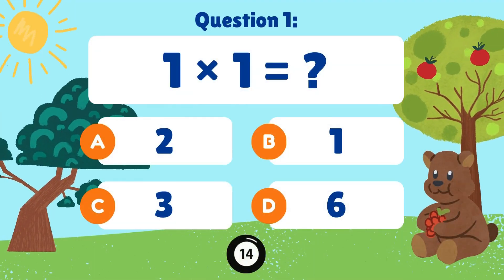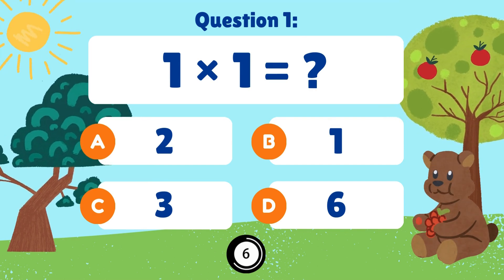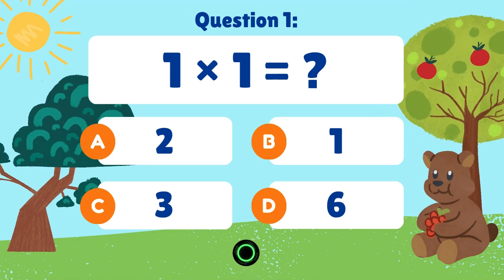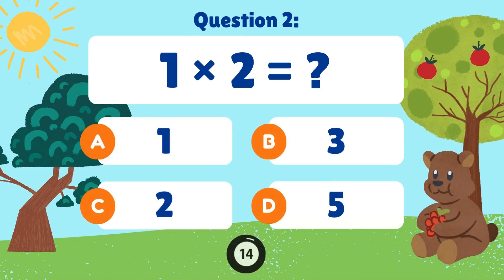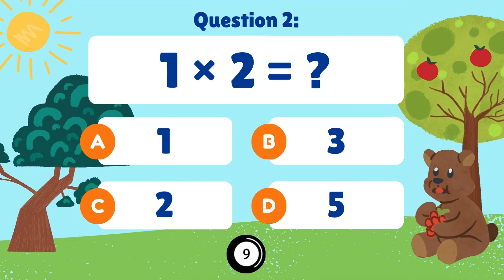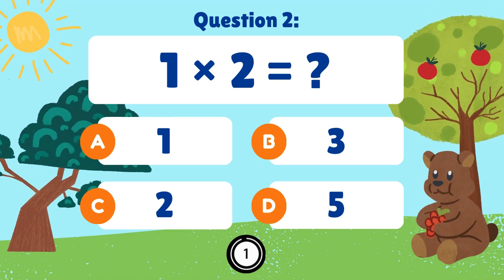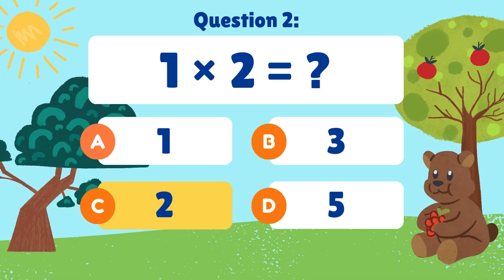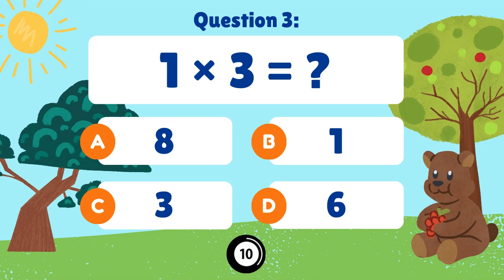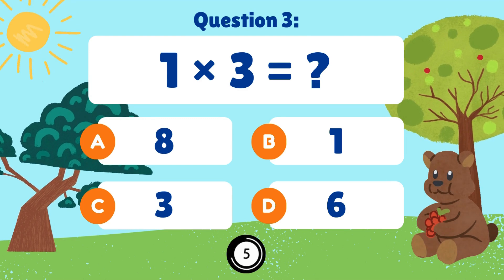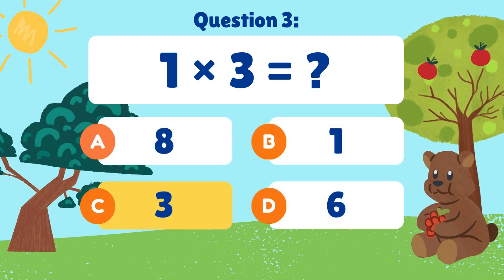1 times 1 is equal to. 1 times 1 is equal to 1. 1 times 2 is equal to. 1 times 2 is equal to 2. 1 times 3 is equal to. 1 times 3 is equal to 3.